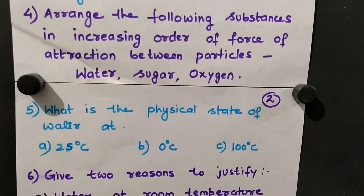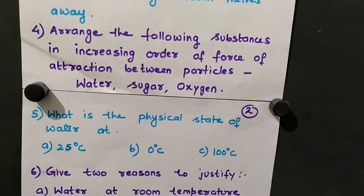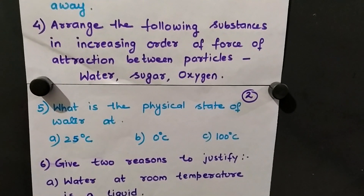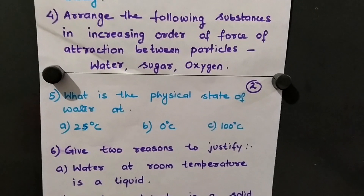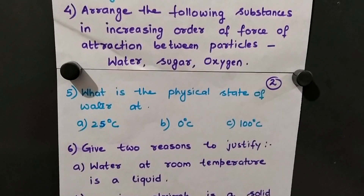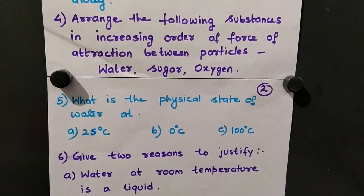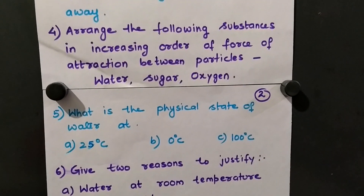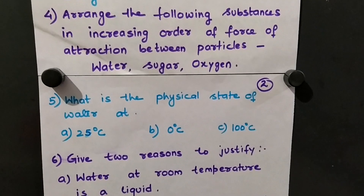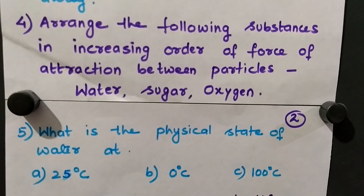Question 4: Arrange water, sugar, and oxygen in increasing order of force of attraction between particles. These three substances differ in physical state at normal room temperature — water is in liquid state, sugar is in solid (crystalline) state, and oxygen is in gaseous state. Since force of attraction is maximum in solids, moderate in liquids, and minimum in gases: oxygen has the least force of attraction, then water, and sugar has the maximum force of attraction between particles.